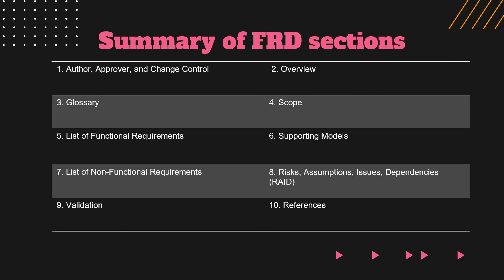Time to summarize. The 10 sections of the FRD are: 1) Author, Approver, and Change Control; 2) Overview; 3) Glossary; 4) Scope; 5) List of Functional Requirements; 6) Supporting Models; 7) List of Non-functional Requirements; 8) Risks, Assumptions, Issues, and Dependencies; 9) Validation; and 10) References. If you enjoyed this video, please give it a like or contribute using the Super Thanks button, and please share it with your friends. Until next time!